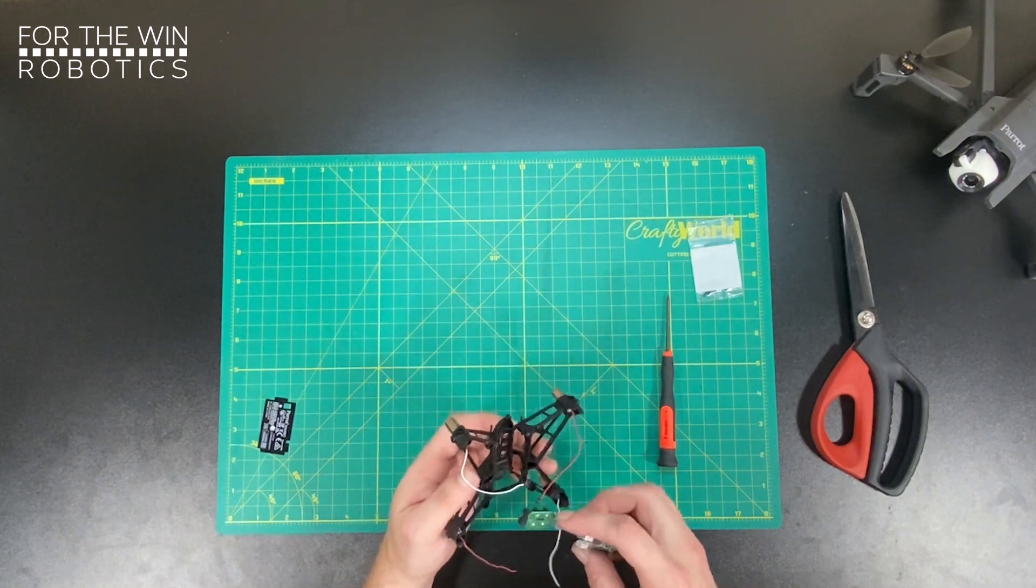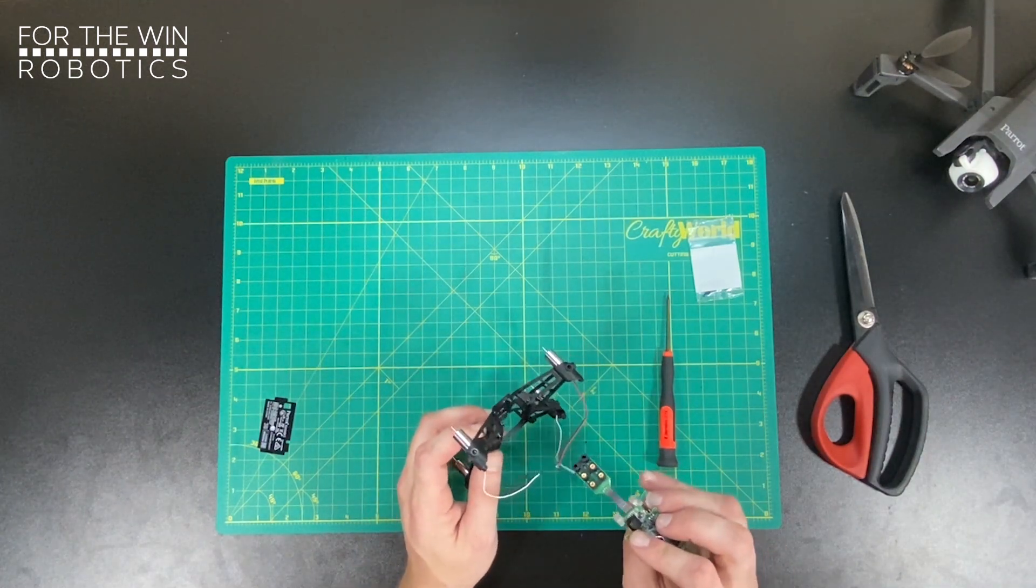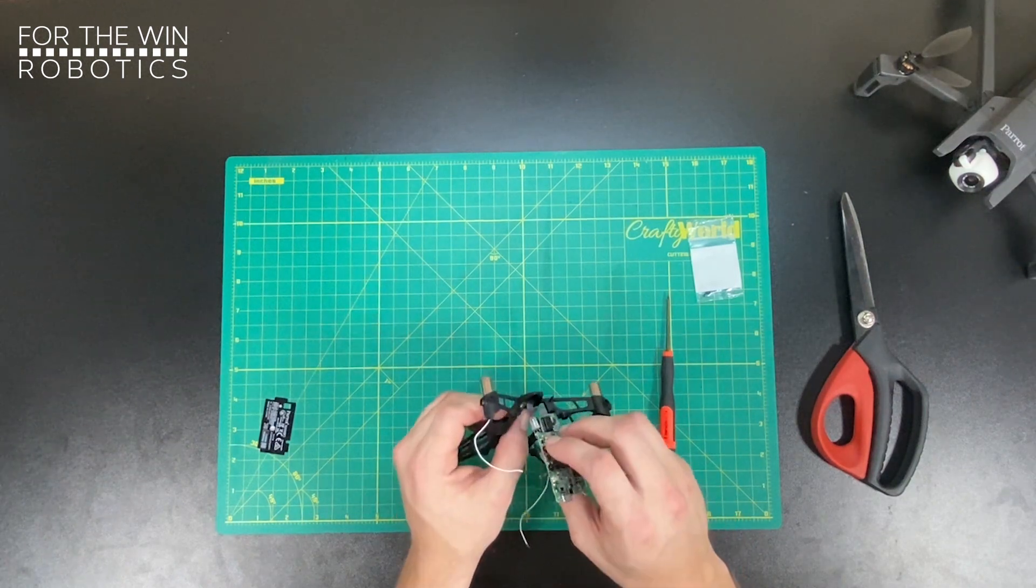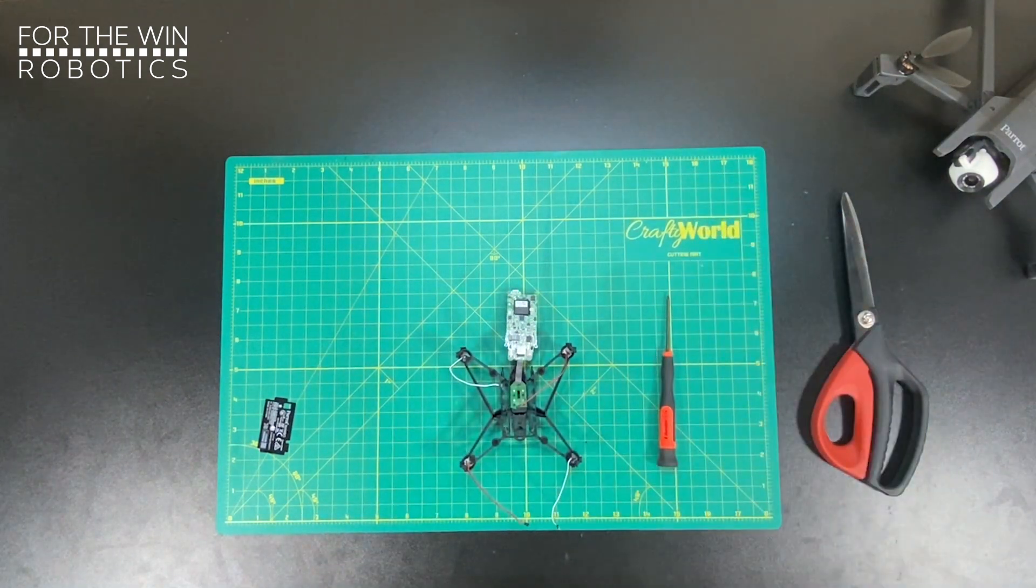you're going to see six holes on the top of the Mambo and six nubs on the top of the motherboard. So we're going to push those in and secure that to the frame of the drone.